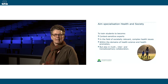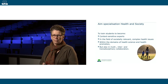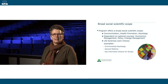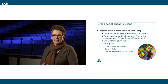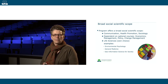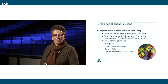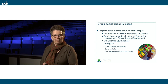In the Specialization Health and Society, we train students to become context-sensitive experts in the field of society-relevant complex health issues within the domains of health science or health promotion, but also in multi-, inter-, and even transdisciplinary collaboration. Health and Society offers a broad scope in which the student has freedom to choose from an area or multiple areas of interest to deepen their knowledge. In addition to that, the student has to choose one life science course to experience working outside the social scientific domain, for example by choosing a course in general medicine. There is a long list of life science courses from which you can choose, and your study advisor can help you in making a choice.